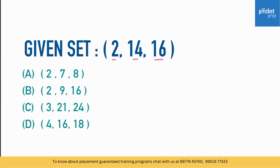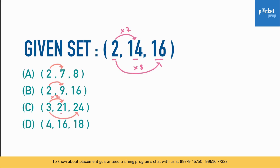The given set is 2, 14, 16 and similar sets are given — we need to identify which two sets are similar. The relation: 2 × 7 = 14 and 2 × 8 = 16. Applying the same logic below, 3 × 7 = 21 and 3 × 8 = 24. Yes, that follows the same logic, so that is the answer.